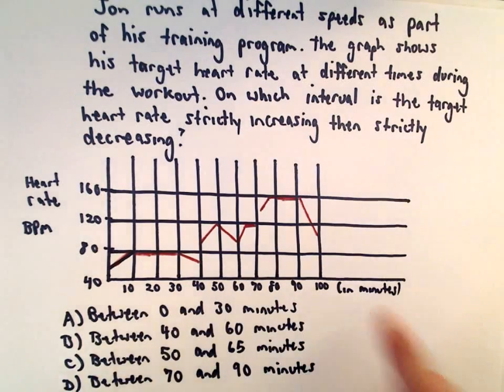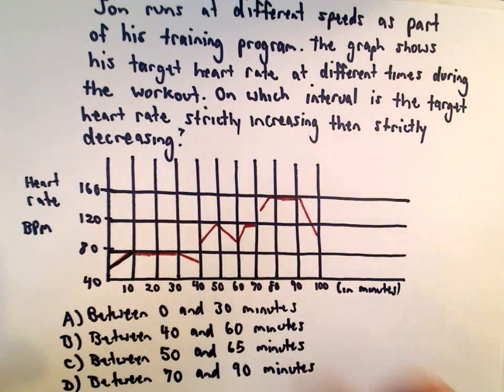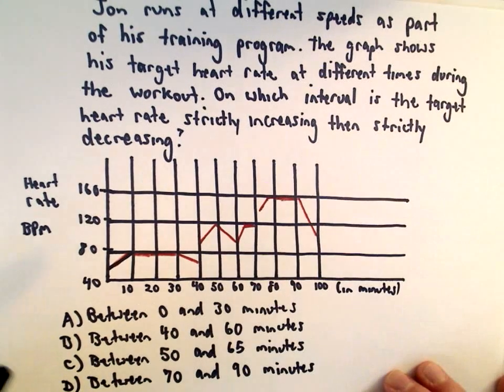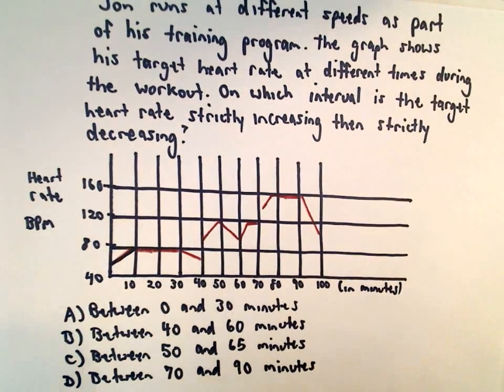We want it to be strictly increasing then strictly decreasing. So basically, the graph should go up and then go down is what it says to me. So let's check them out.